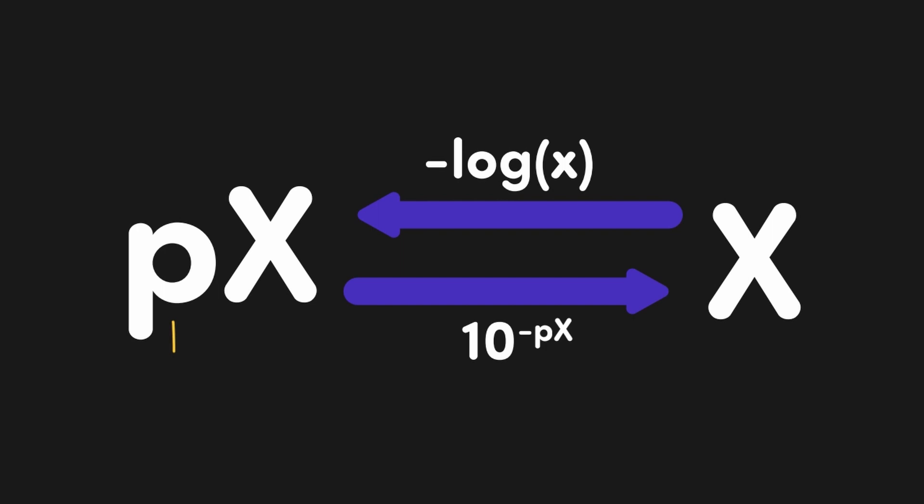First up is the conversion between p-scale values, such as pH, pOH, pKb, and pKa, and their non-p-scale counterparts, such as hydronium concentration, Ka, etc. By taking the negative log of any non-p-scale value, we convert it into its matching p-scale. And if we want to go the other direction, we simply raise 10 to the negative px value and end up with our x value.